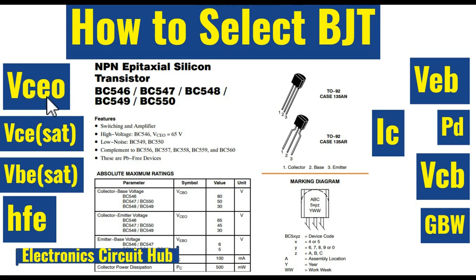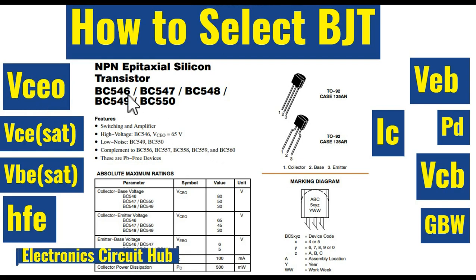The first parameter you need to look at is VCEO. This is a very important parameter — it is the collector-to-emitter voltage when the base is open. The 'O' stands for 'when base is open.' Let us say you want to drive your LED with 5V; you will look at what is your collector-to-emitter voltage when the base is open. For the BC546, VCEO is 65V, as you can see here, so you are safe enough.